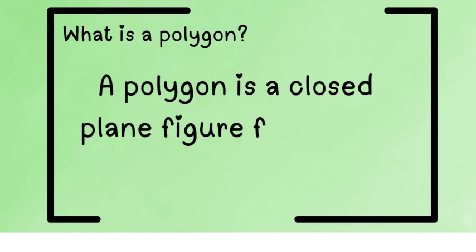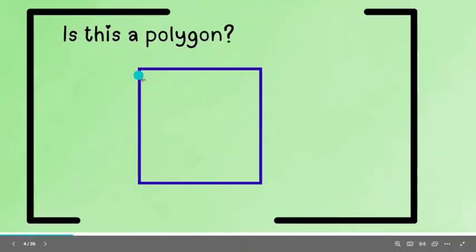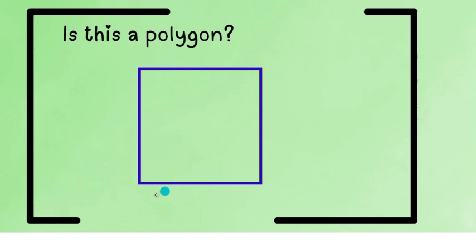So what is a polygon? A polygon is a closed plane figure formed by line segments. Now look at this shape. So this is a square maybe. Now the question is, is this a polygon?